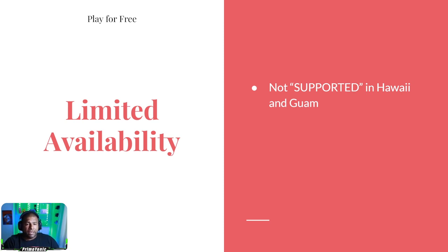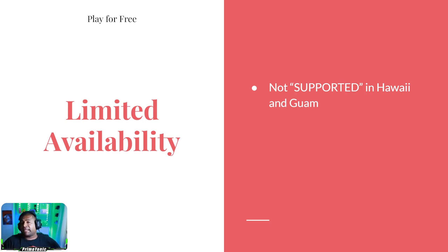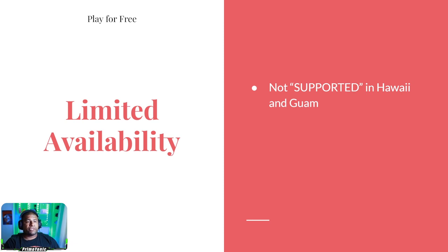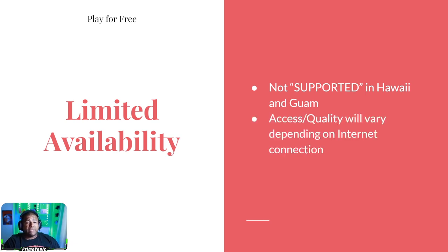A good example is me — I live in Hawaii. Technically, if you go to the Stadia website, there's no support for Stadia in Hawaii. I can still access it, sign up, and buy games since it's all digital. But if I want to buy a controller, I have to buy them used online or have somebody from the mainland send them to me. I still get really good quality and experience with it — I'm just not sure why they don't support it.